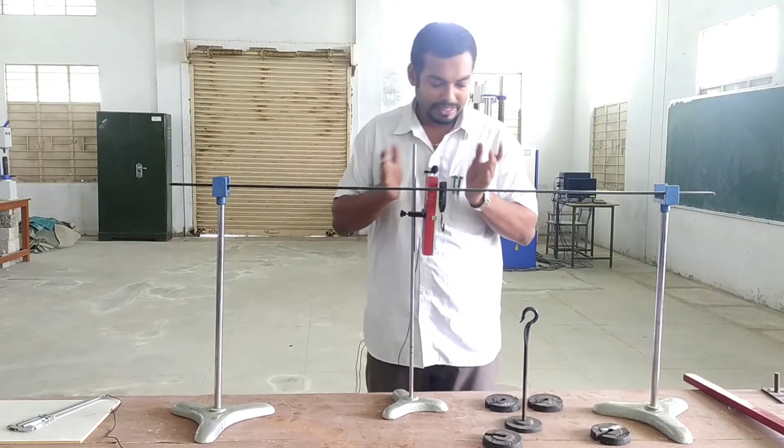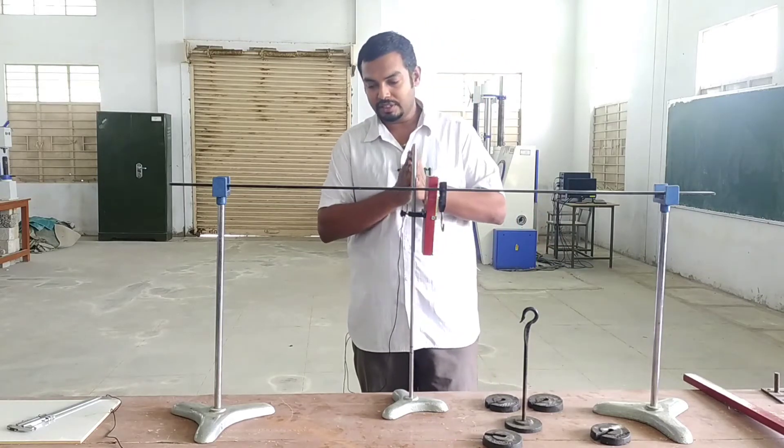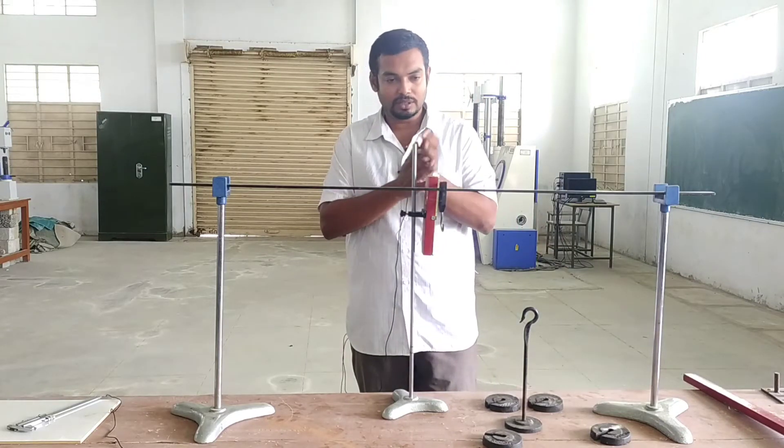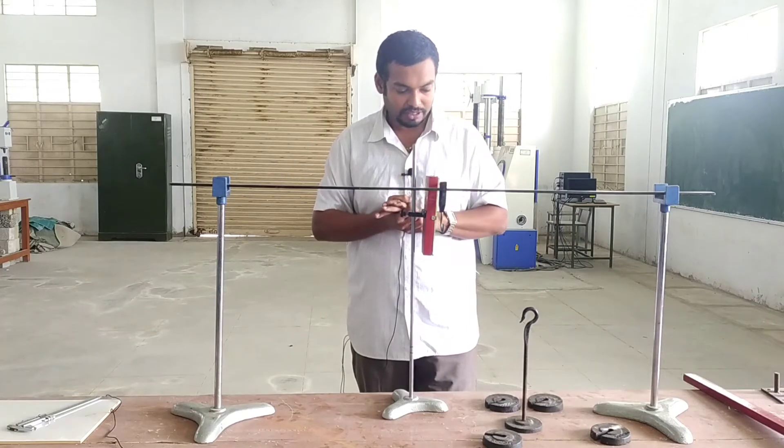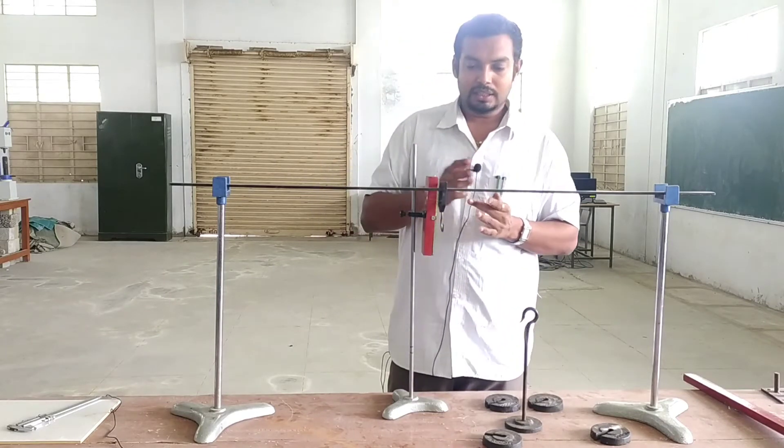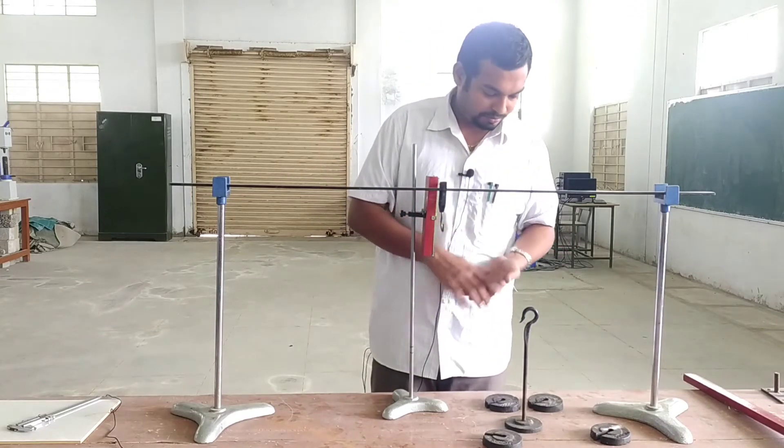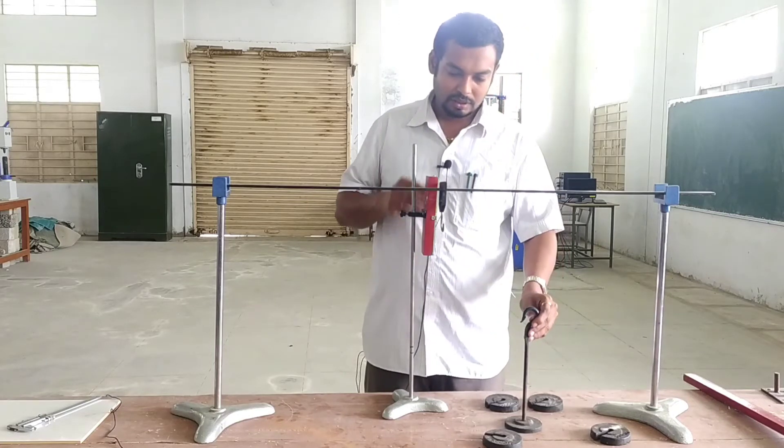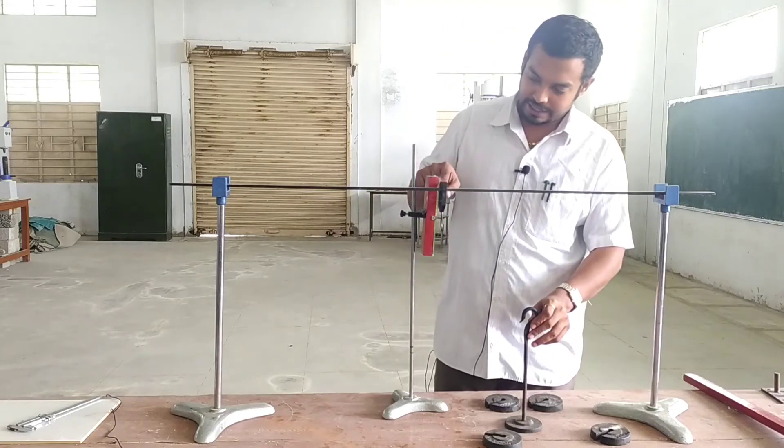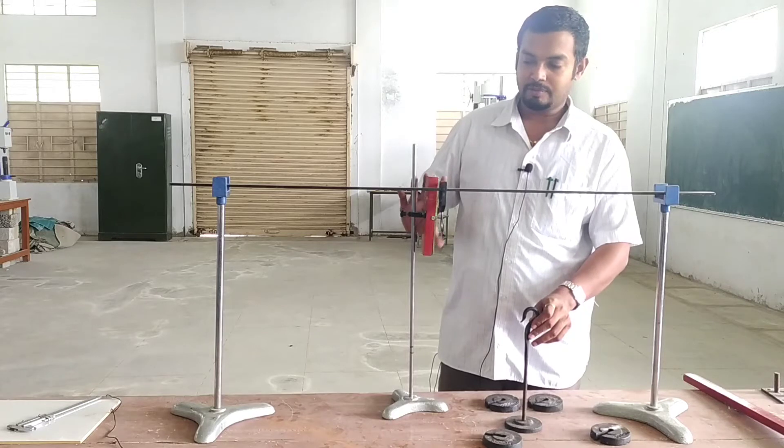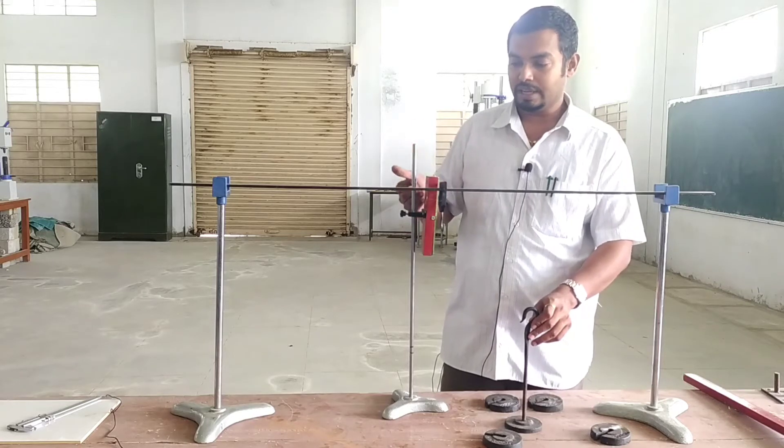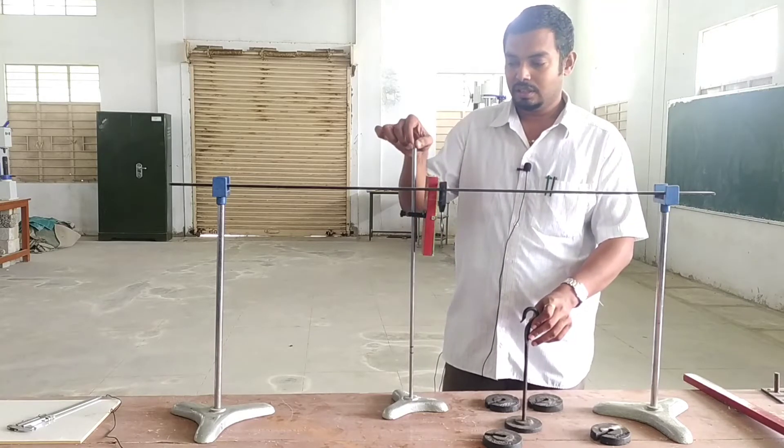Overhang this deflection. That is the central point load we can apply. Here is the scale. This is the setup. This is the ordinary scale, we can place it.